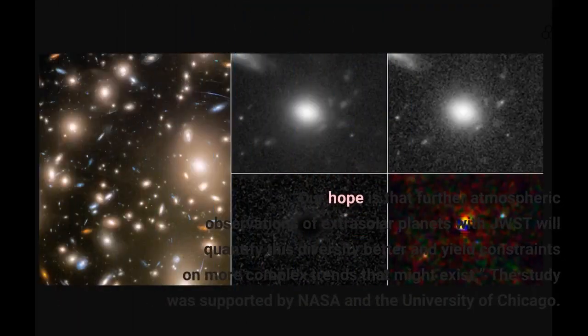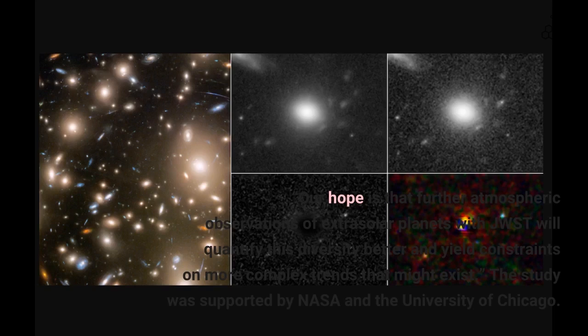Our hope is that further atmospheric observations of extrasolar planets with JWST will quantify this diversity better and yield constraints on more complex trends that might exist. The study was supported by NASA and the University of Chicago.